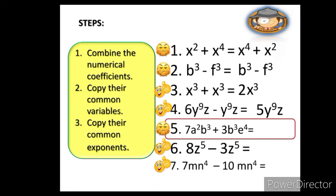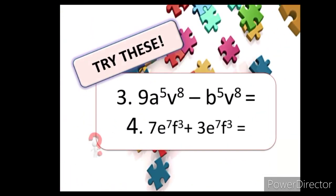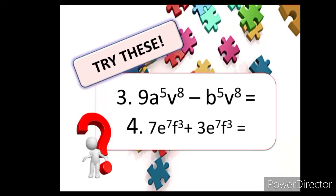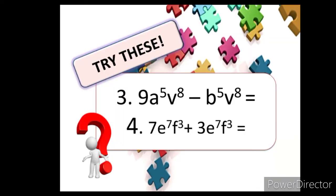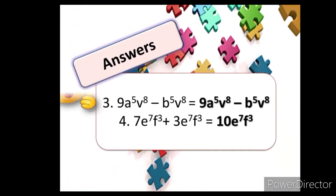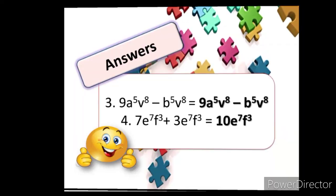Number 5 cannot be combined because they do not have the same variables. All you have to do is to copy everything. Another try this. Did you got the items correctly? Good job! Let's proceed to number 6.